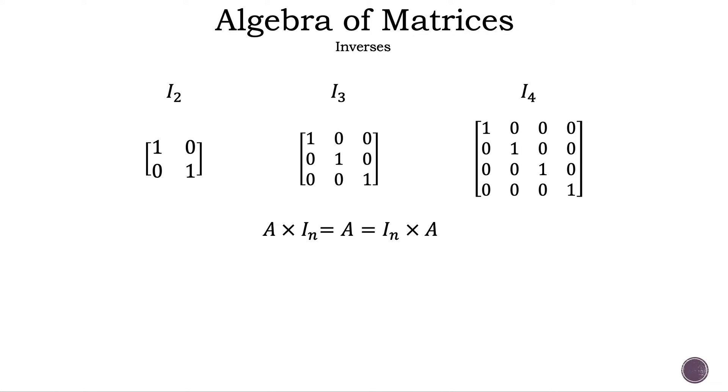When we multiply a matrix by its identity matrix, or vice versa, the resultant matrix will be the original. Now let's take a look at an example using a 2x2 matrix. Here we have our original matrix, which is a 2x2 matrix, multiplied by its identity matrix, or vice versa, and our answer is still the original matrix.